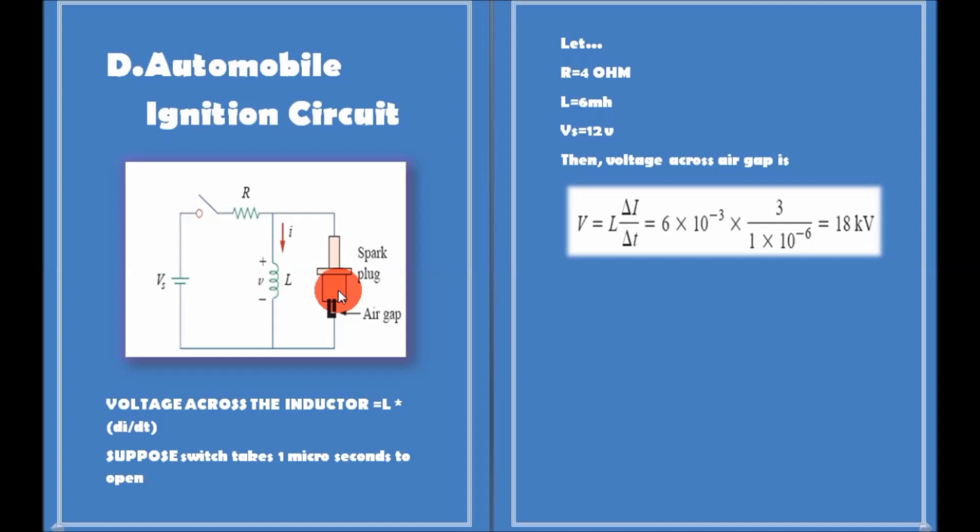But the main question is, how can such a large voltage be obtained from the car battery which supplies only 12 volts? This is achieved by means of an inductor.